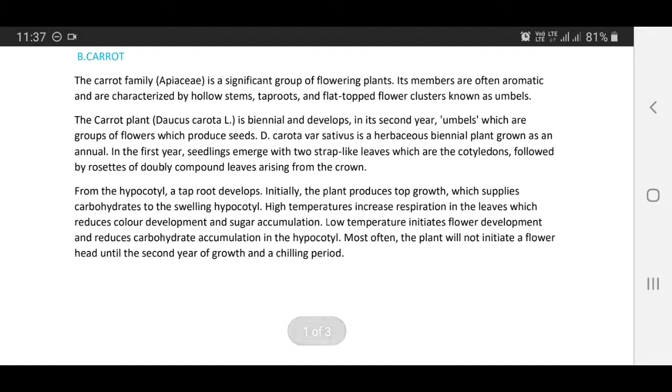The carrot plant Daucus carota is biennial and develops in its second year umbels, which are groups of flowers which produce seeds. Daucus carota is a herbaceous biennial plant grown as an annual in the first year.